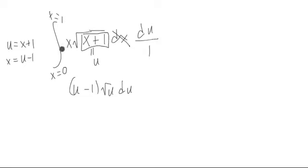We can rewrite this as u minus 1 times the square root of u, and we just have du. Now, how do the bounds change? When x is 0, u is 1, because you just plug in 0 right here, and you get 1. When x is 1, then u will be 2.